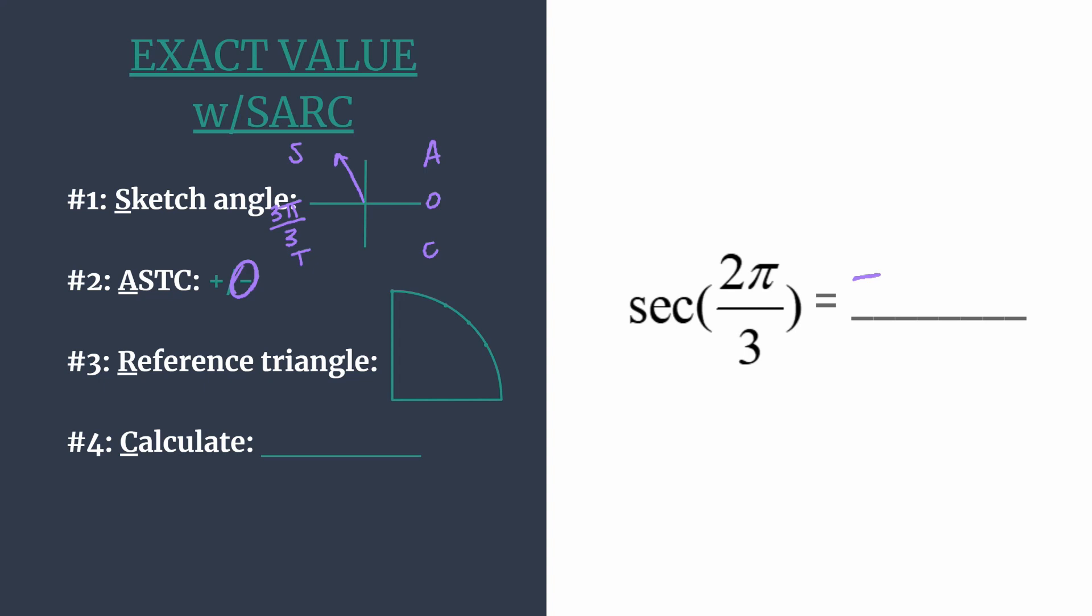Alright, so now we can find our reference angle and the special right triangle to get our unit circle coordinates for our calculation. So a reference angle is simply the amount of rotation from the terminal side to the x-axis. So we know our angle was 2 pi over 3, so to get to 3 pi over 3, you must rotate pi over 3 radians, or 60 degrees.